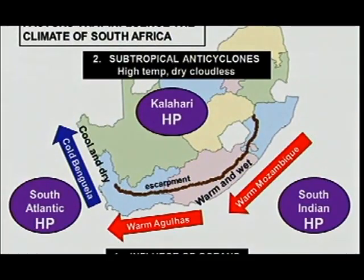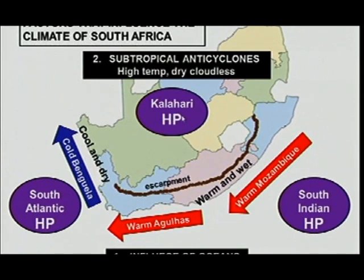Please don't forget that. So here we've got the Kalahari high pressure, and here we've got the South Atlantic and the South Indian high pressure. As we progress, you will see that the South Atlantic and South Indian high pressure play a very important role when it comes to line thunderstorms, and your Kalahari high pressure plays a very important role when it comes to the SA bergwind. So you must know the role of each of these.